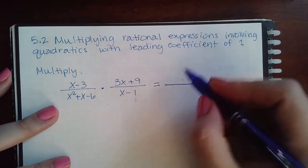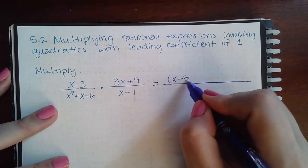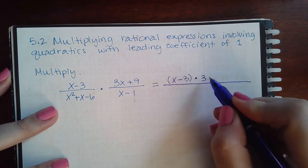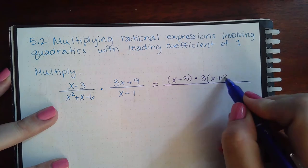So I'm going to have x minus 3 multiplied by this, but I'm actually going to factor that. It's 3 times x plus 3.